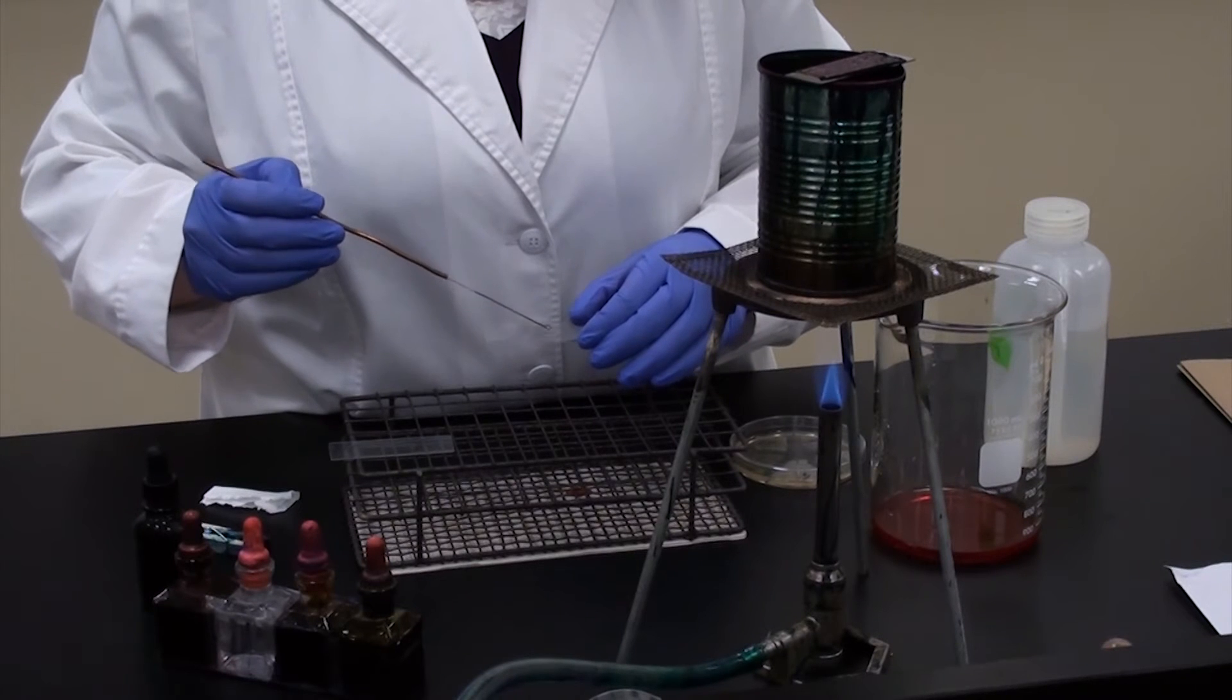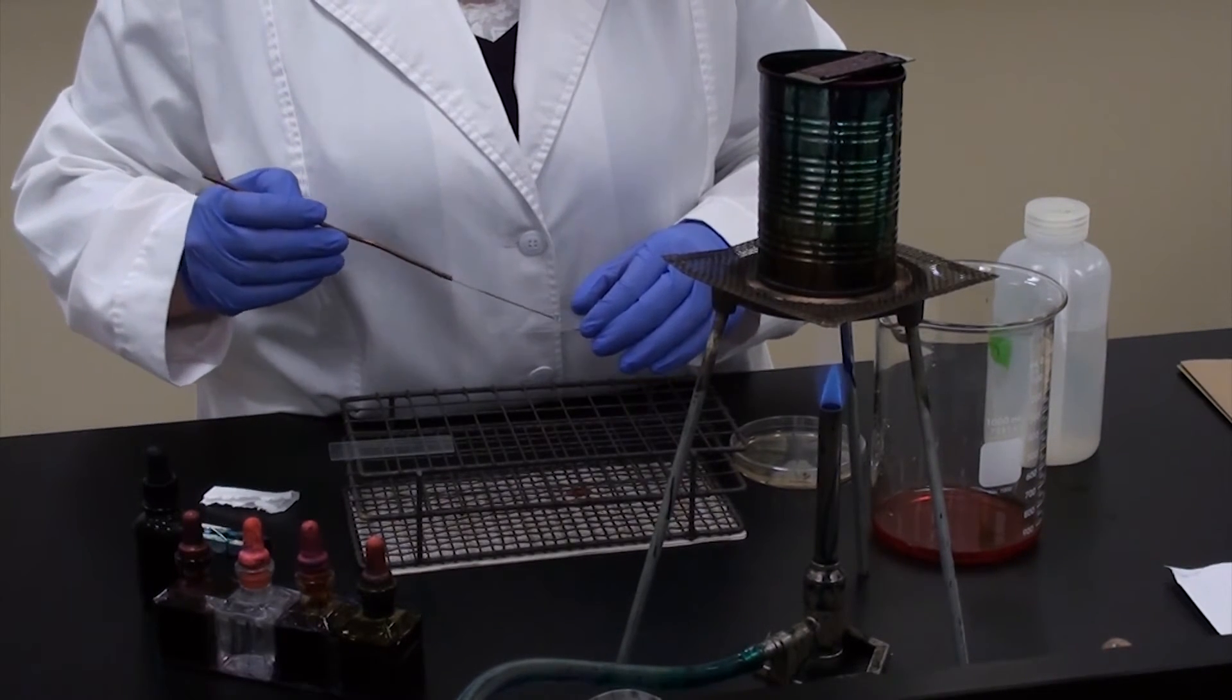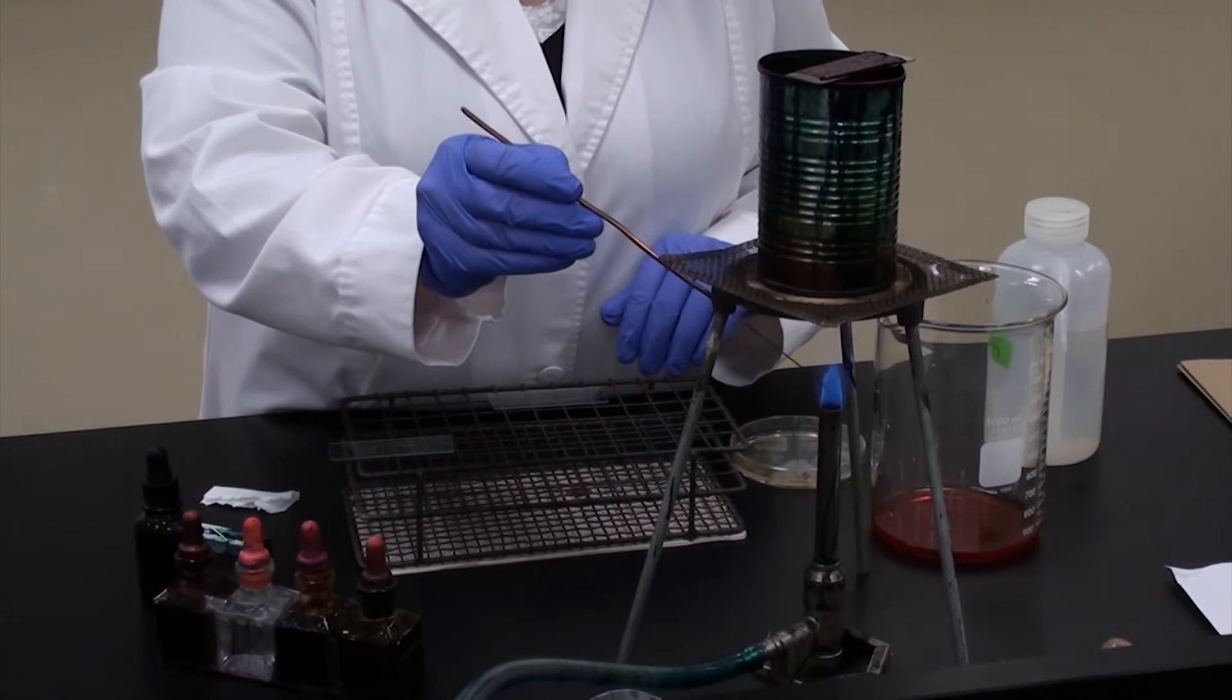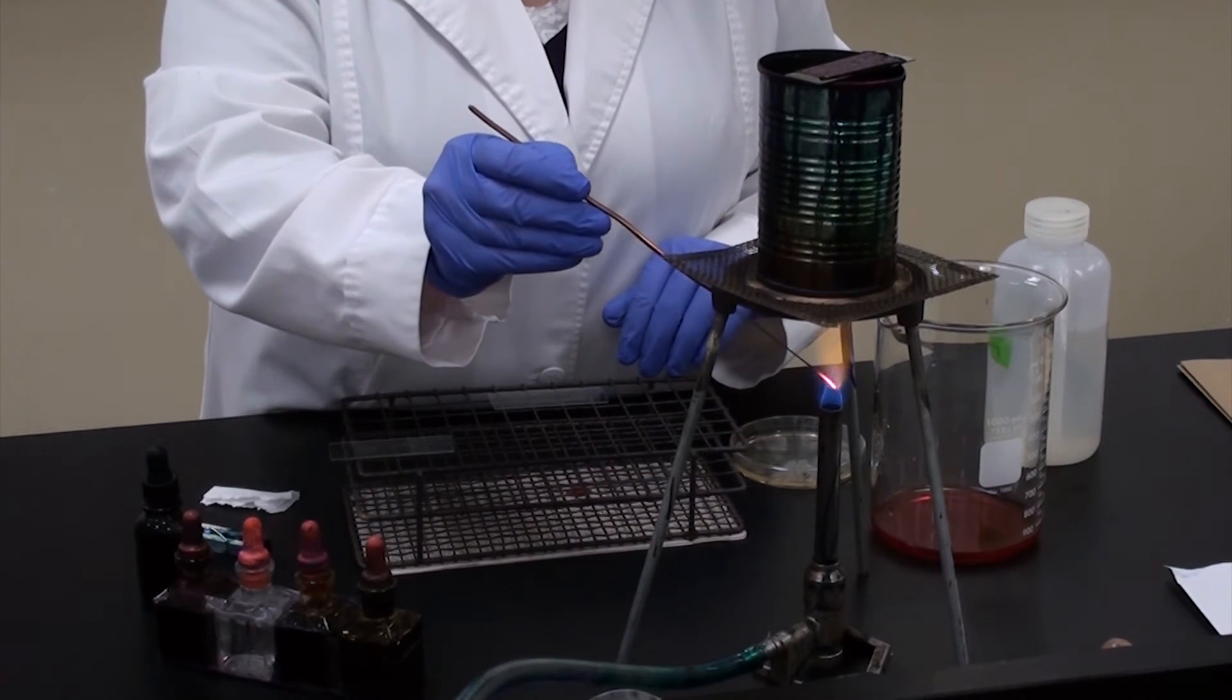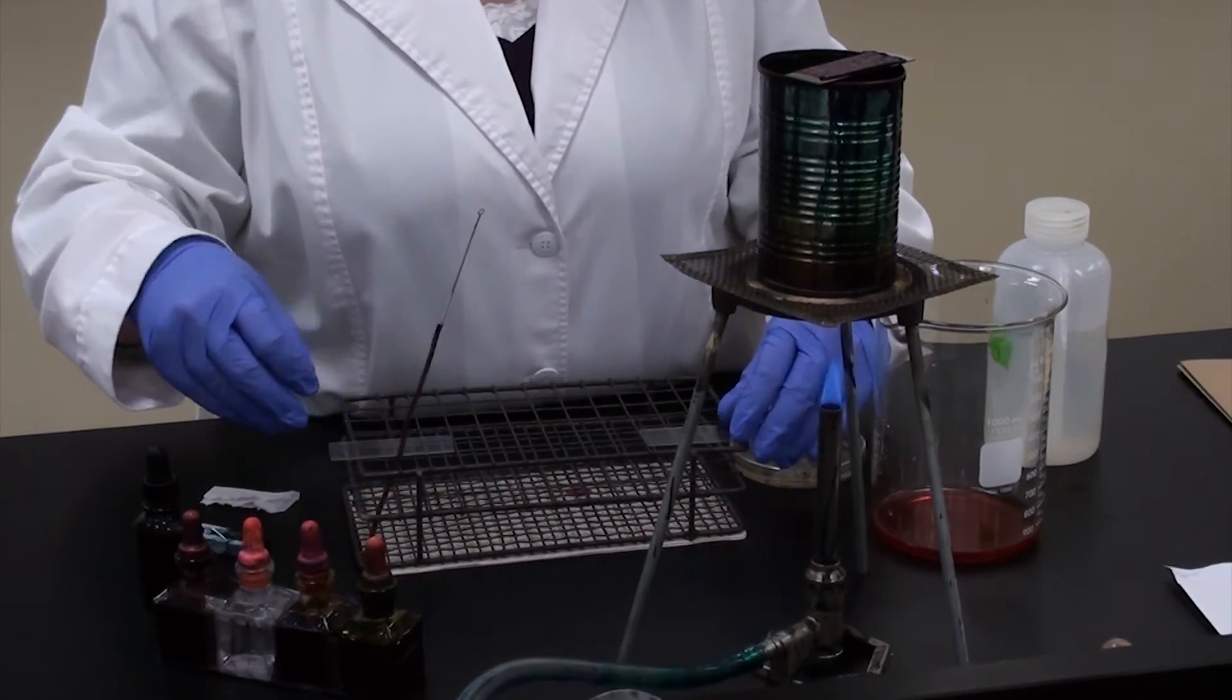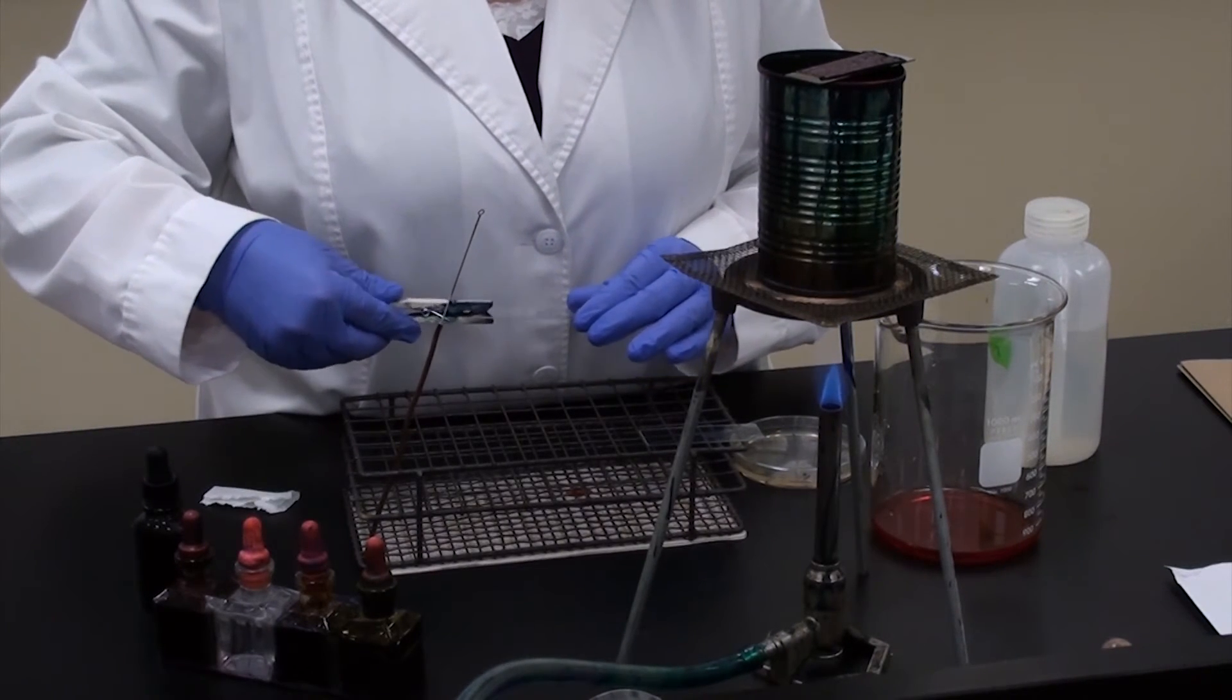Again, transferring it to the single drop of water and spreading it around on my slide, nice and thin. Then reflaming my loop and setting the slide off to air dry completely. Now I've already prepped a slide and allowed it to air dry, so I'm going to heat fix the organism to the slide.